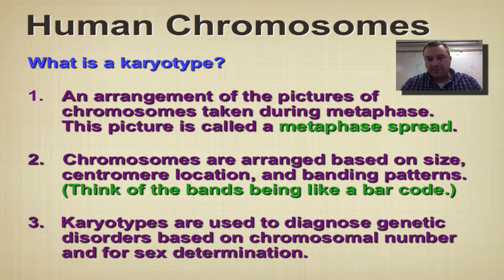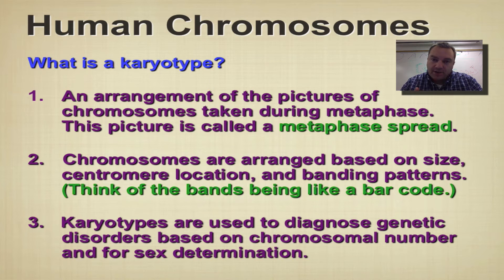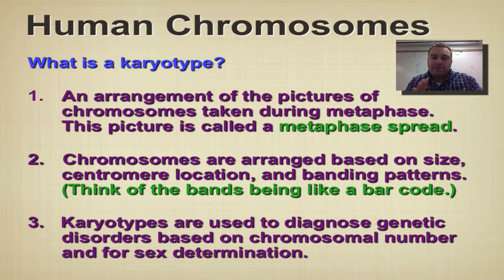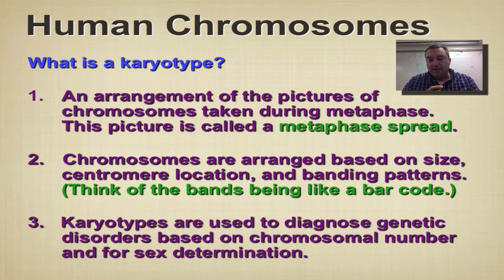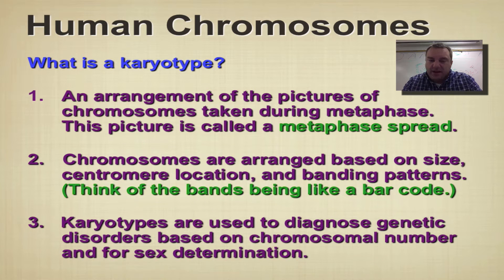Basically, a karyotype is when we've let a cell go through cell division but paused it at metaphase. You can use certain chemicals and add them to a cell, which allows the cell to get to metaphase and then stop the procedure. So we let a cell go through mitosis, stopped it at metaphase, took that cell out, broke it open, and spread the chromosomes out on a piece of paper, so to speak, and then we took a picture of it.